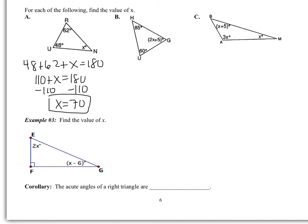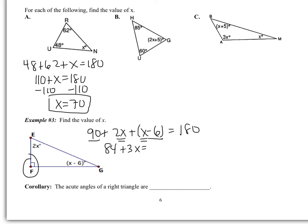Parts B and C we'll leave for class. For Example 3, try this on your own. You should notice the 90-degree angle, so: 90 + 2x + (x − 6) = 180. Simplifying: 84 + 3x = 180, so 3x = 96, giving x = 32. Checking by substituting back: 2(32) = 64 and 32 − 6 = 26. Then 64 + 26 + 90 = 180, confirming the answer is correct.